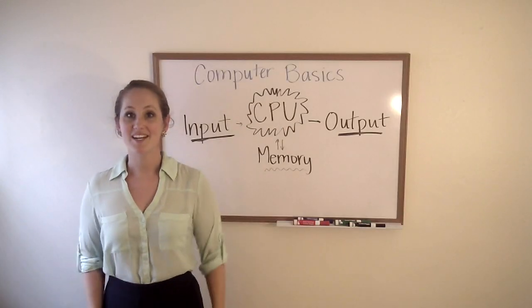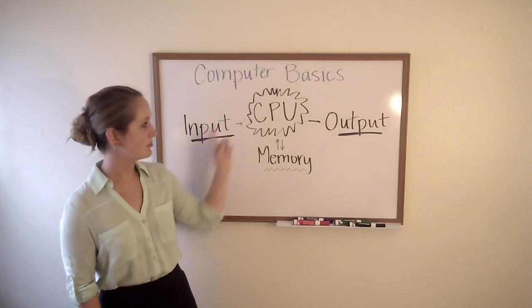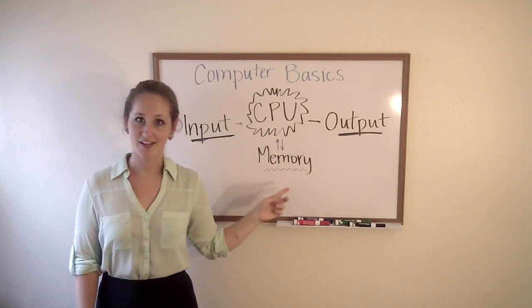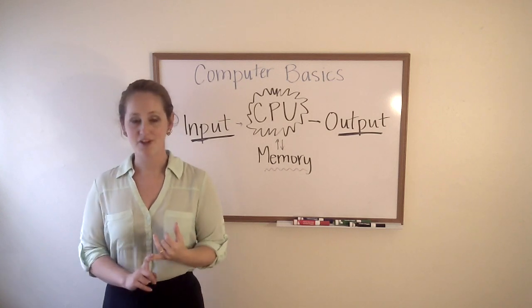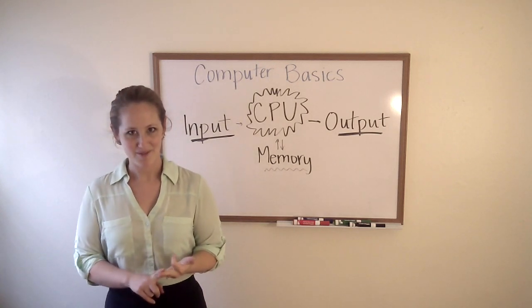So let's do a quick review. In addition to the four basic parts of input, output, central processing unit, and memory, we usually have a motherboard, expansion cards, and a power supply.